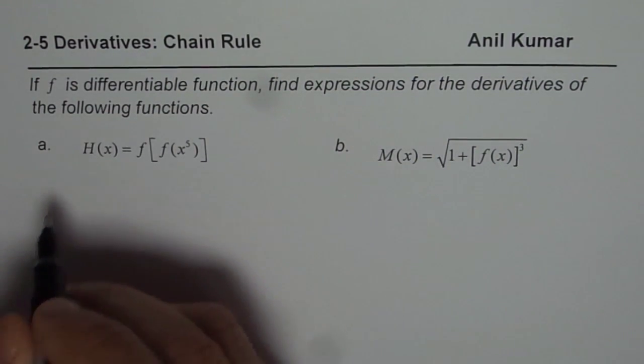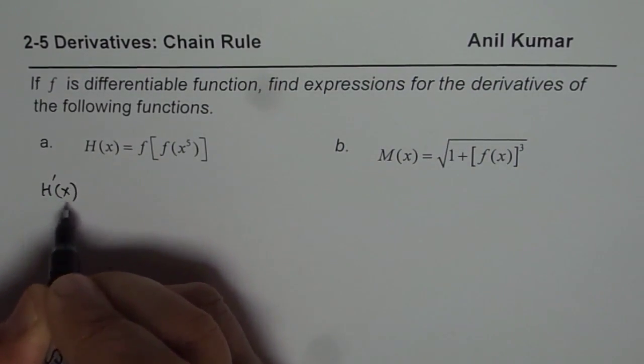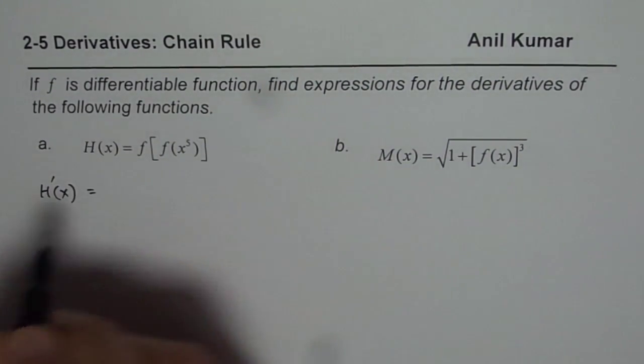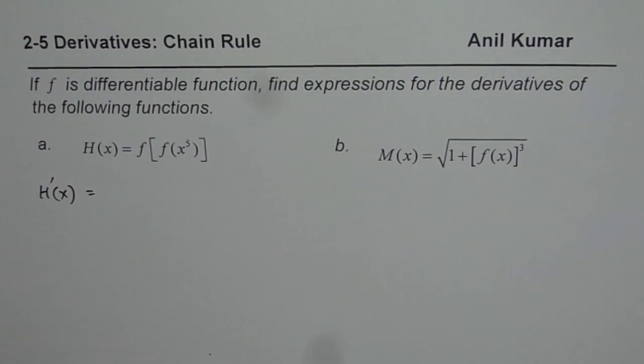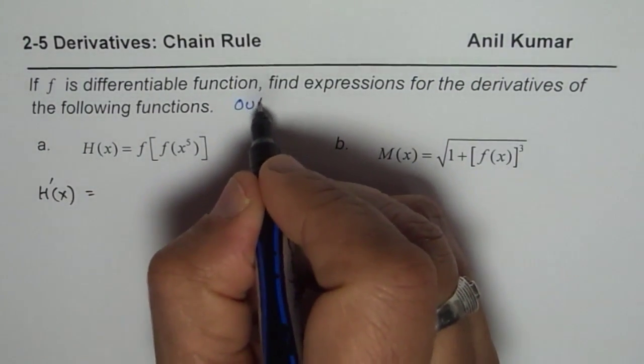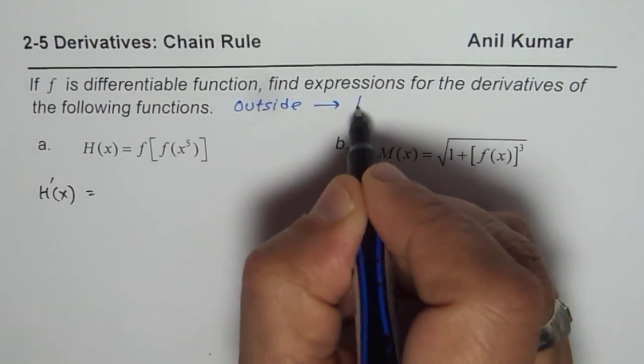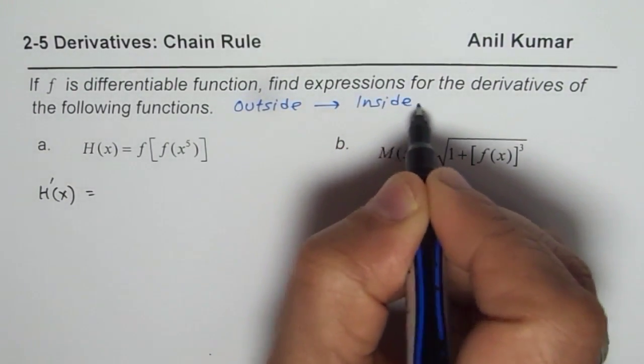To find the derivative, we should find the derivative of the outside function and then move inside. The chain rule always applies from outside to inside. You have to move inside to get your result.